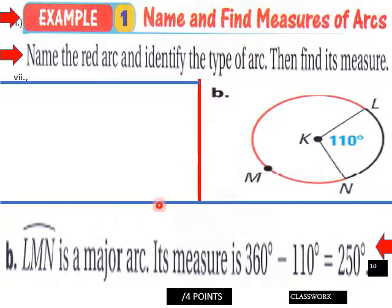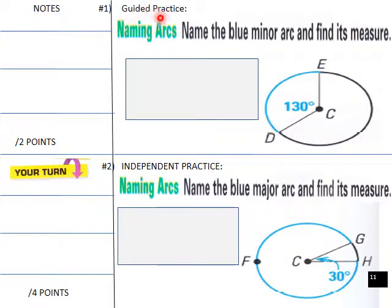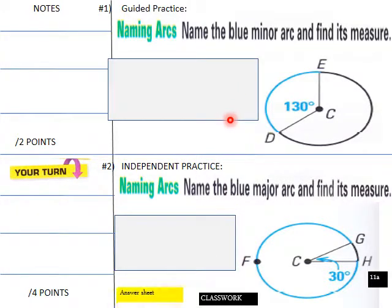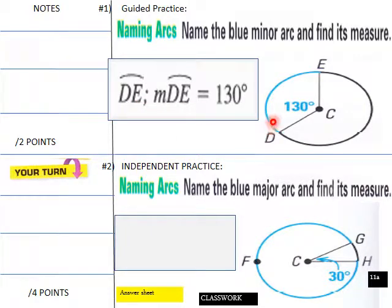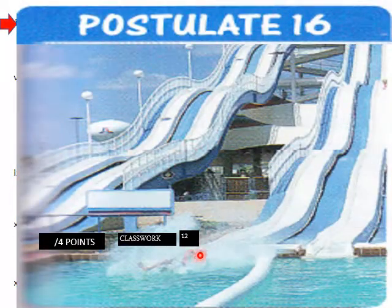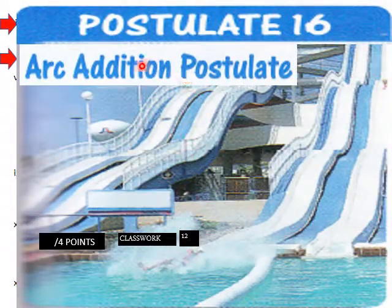Now guided practice: name the blue minor arc and find its measure, then name the blue arc below and find its measure. The name of the arc is arc DE, and the measure of arc DE is 130 degrees.